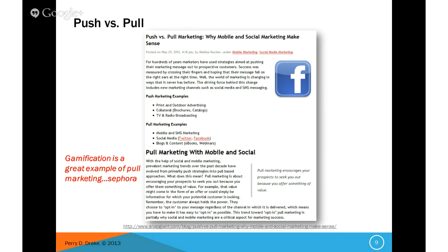The lines do get a little fuzzy because I could look at a catalog as pull if I requested it. On the pull side, you have mobile, SMS marketing, texting, social media, Twitter, Facebook — it's there if we want to go to it. Blogs and content are another great example; the information's there if we want to go to it.